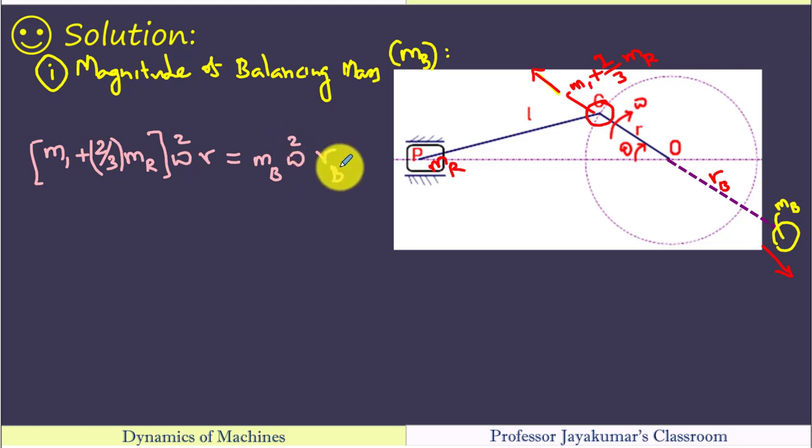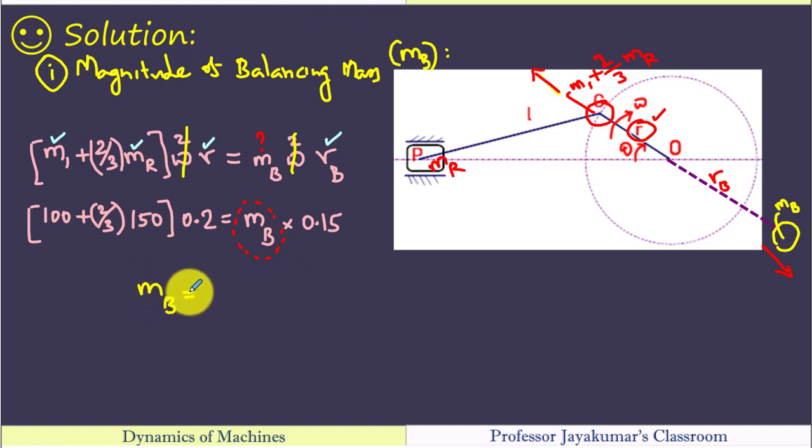We can easily write this equation. M1 plus 2 by 3 M_r omega square R is equal to Mb omega square Rb. So we could cancel omega square omega square. By using this equation, we can find our only one unknown Mb. So just by substituting the given data. I am getting 266.67 kg as my answer. So we got the first answer.